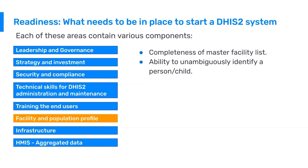A key aspect of a DHIS2 system is the facility and population profile. An important thing to assess before starting with DHIS2 is whether there is a master facility list in the country — does the country have an overview of all facilities with associated data to use as the basis for the DHIS2 system? You also want to understand whether the country has the ability to identify a person or child unambiguously, such as through social security numbers or ID numbers.